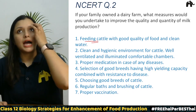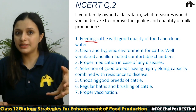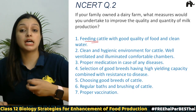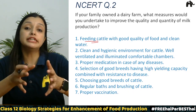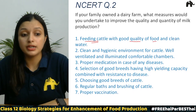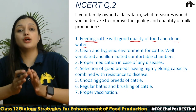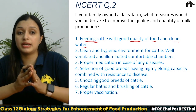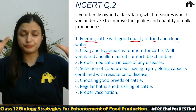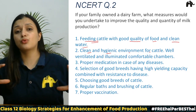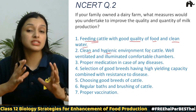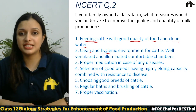First: feeding of cattle. Just as healthy food is important for us to get nutrients, the feed of cattle is also important. Feed cattle with good quality food and clean water. Second: maintain a clean and hygienic environment for cattle — the sheds and living areas for animals should be cleaned periodically so that animals can live well.